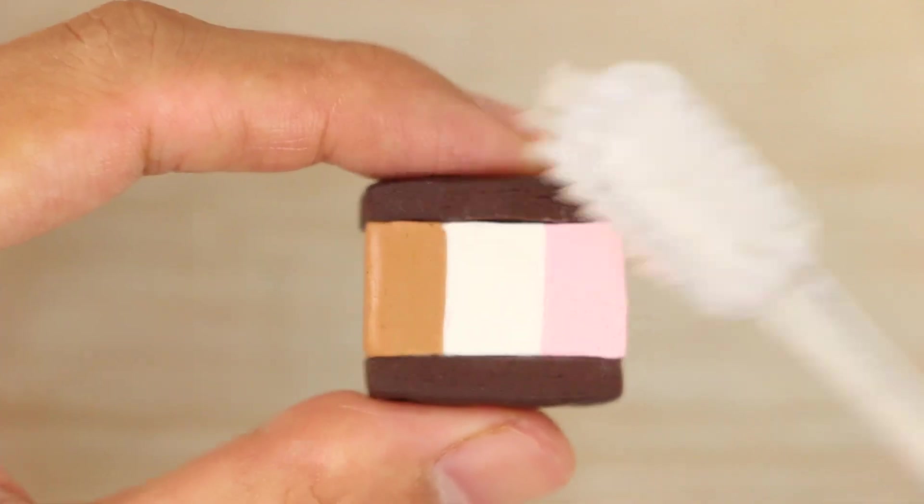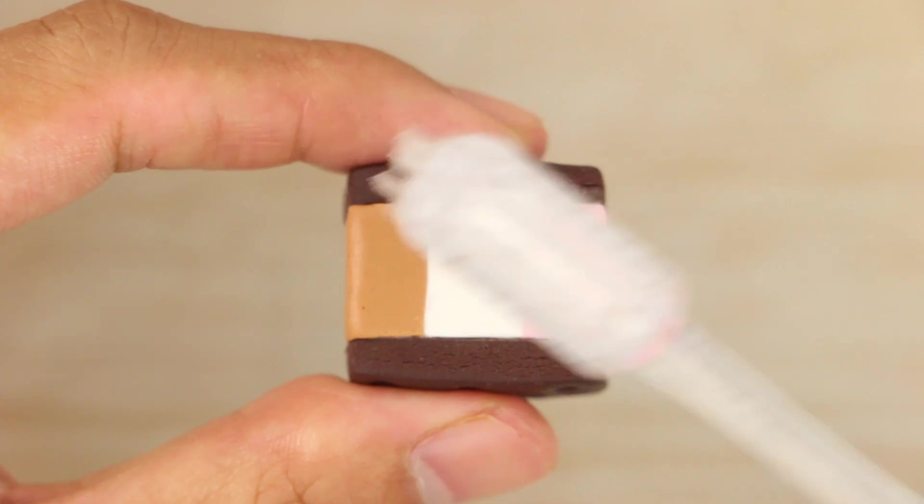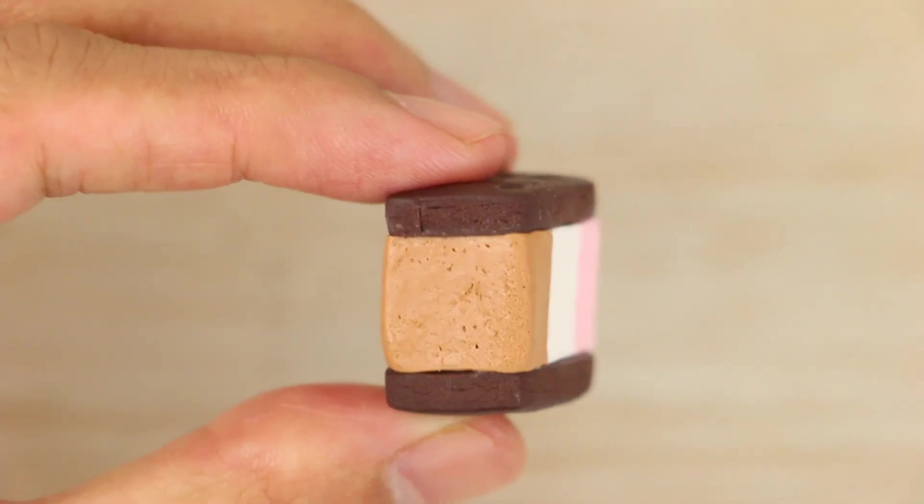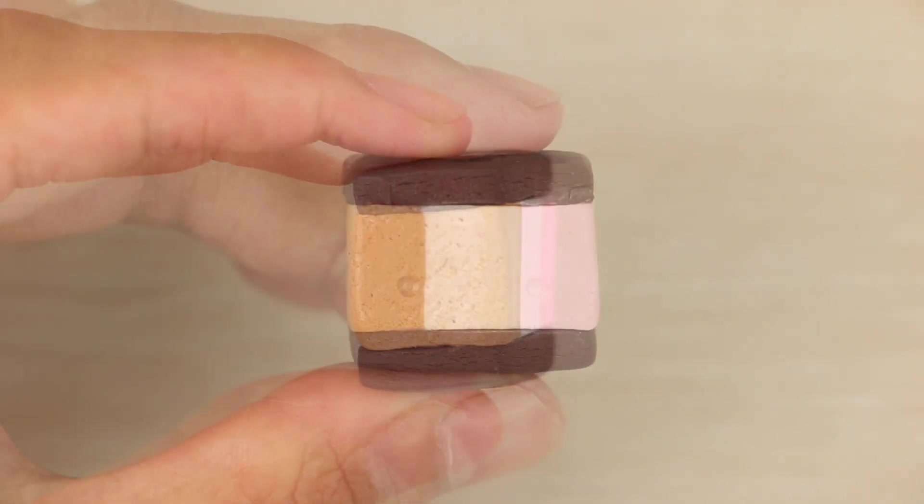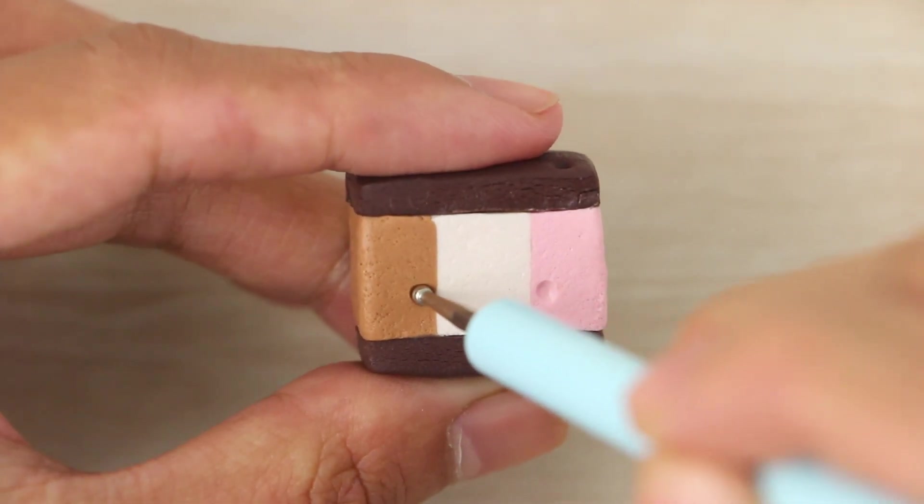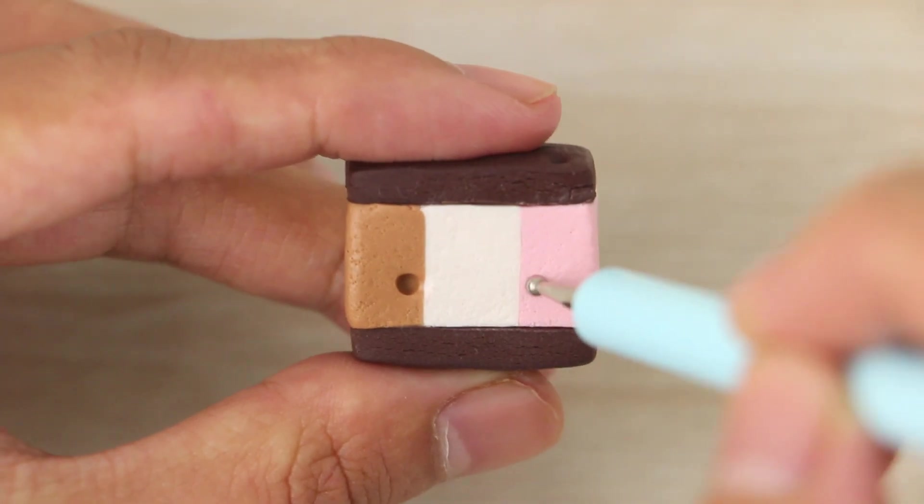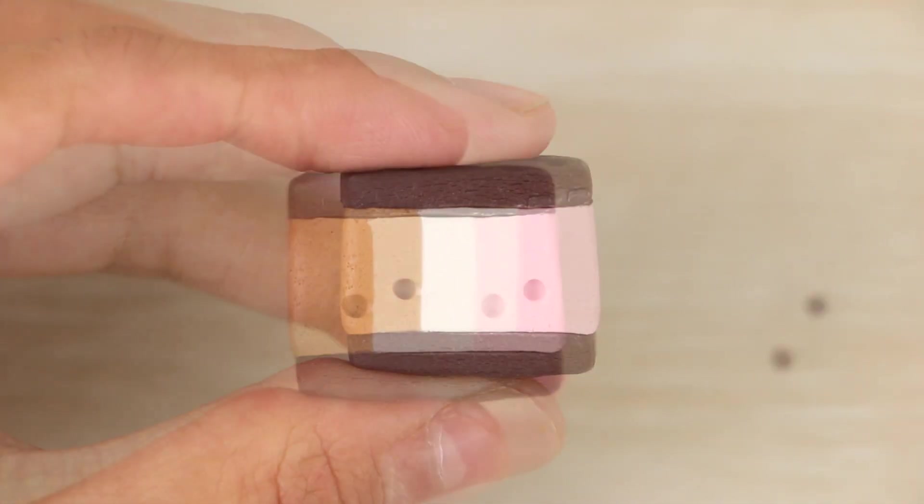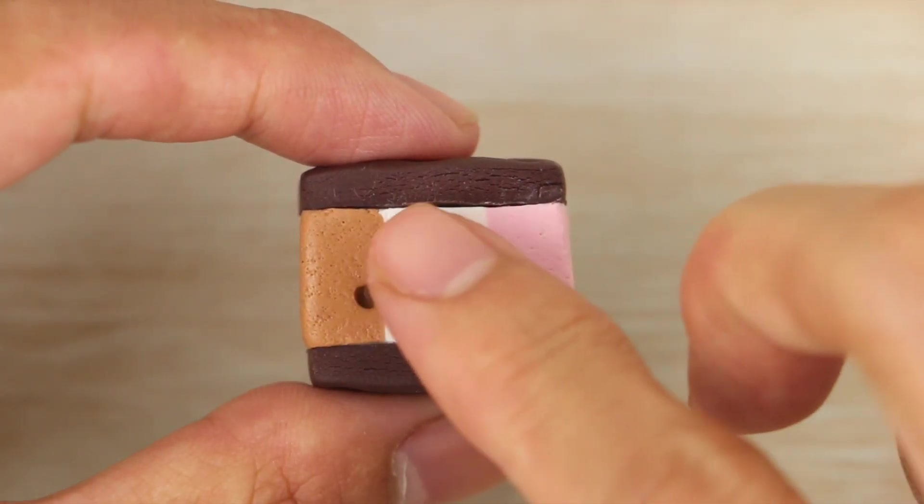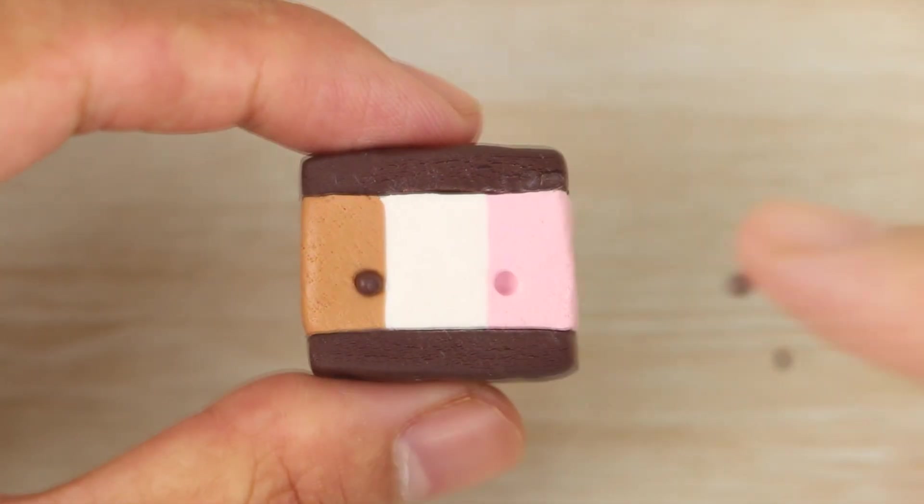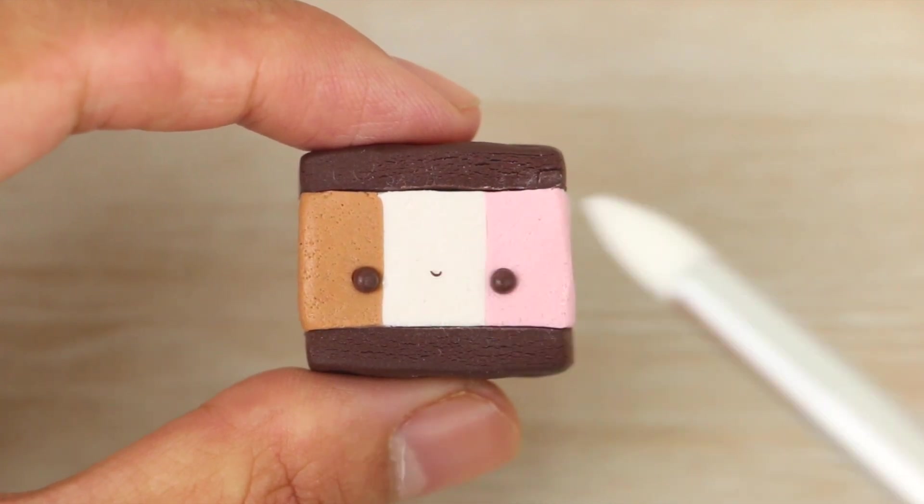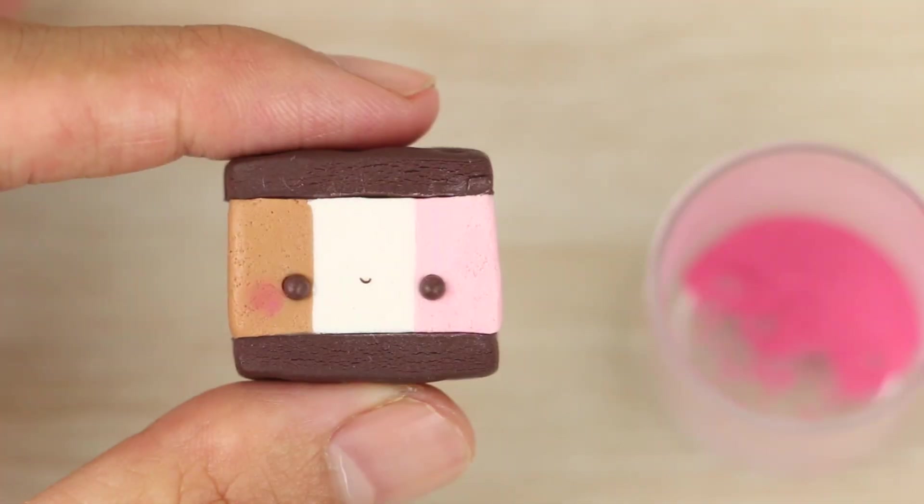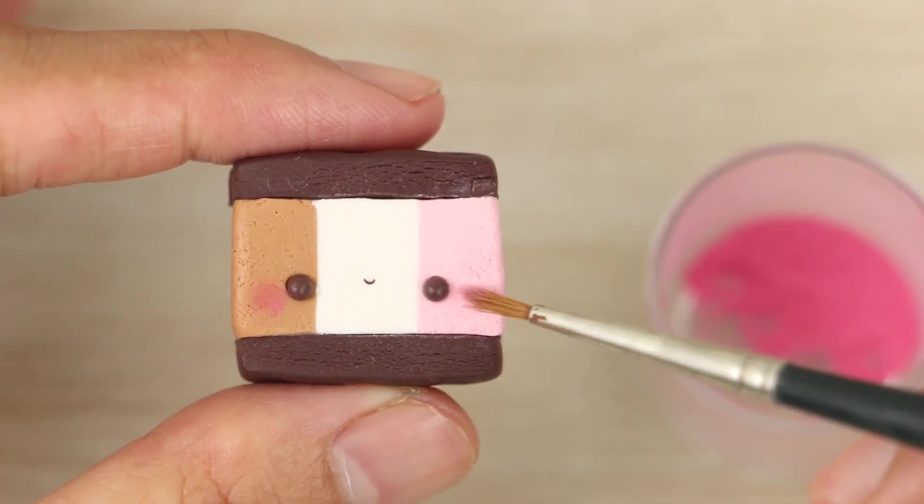I'm then adding some texture to all the sides of the ice cream, dabbing all over the surface with a toothbrush. And now it's time to add the face. So just using a dotting tool to poke some holes for the eyes to go into. And then adding in balls of dark brown and a tiny little u-shape for the mouth. Then for the cheeks, I'm brushing on some pink chalk pastel.